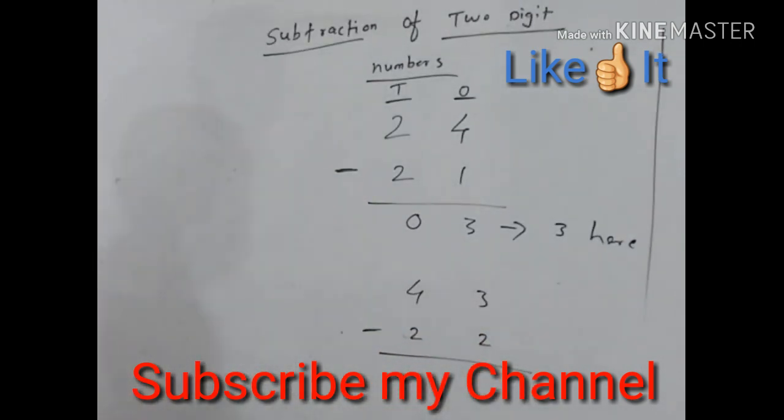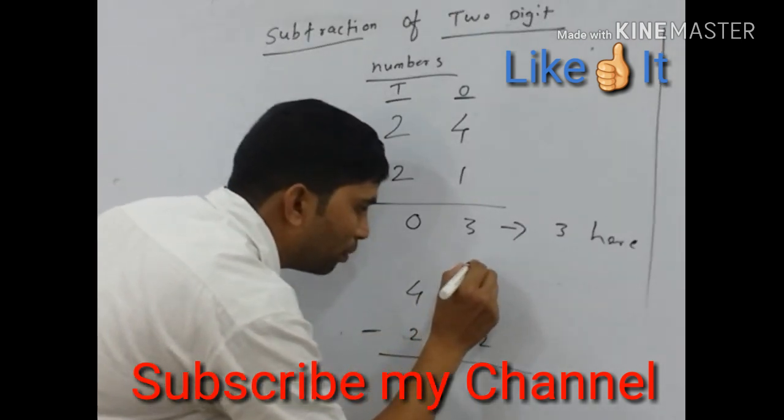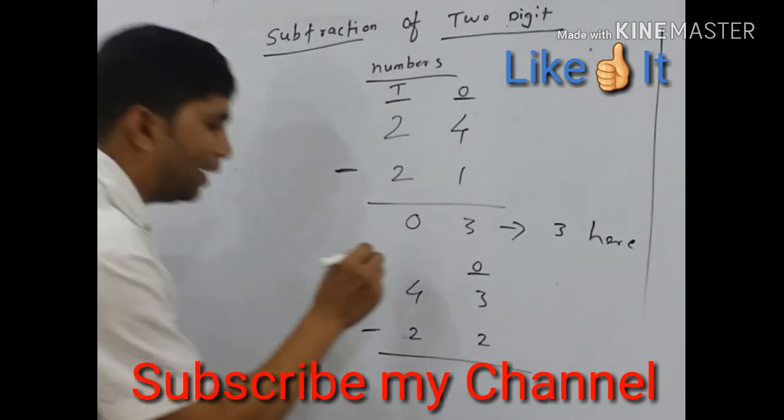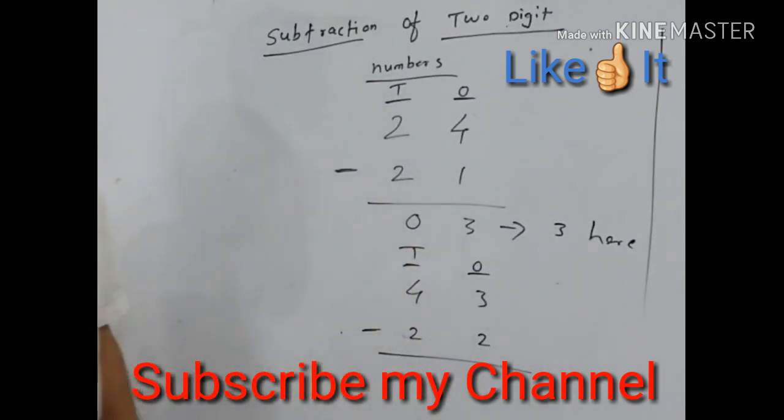Here is also a two-digit number. Places are ones place, denoted by O, and tens place, denoted by T.